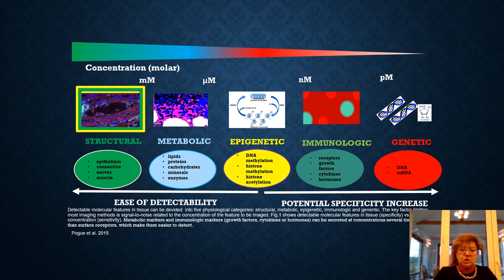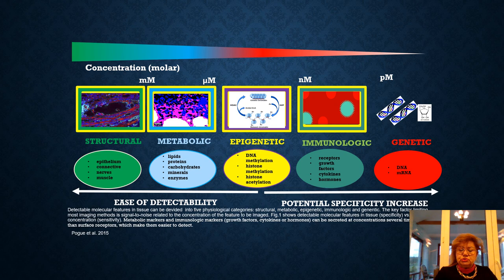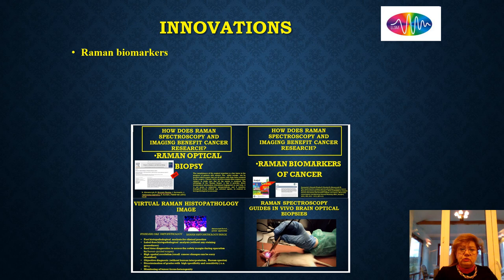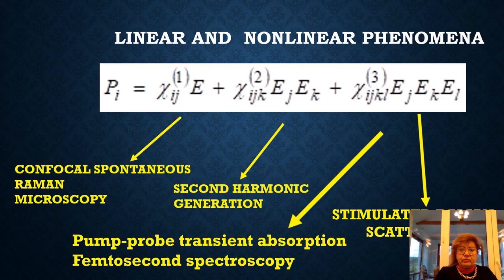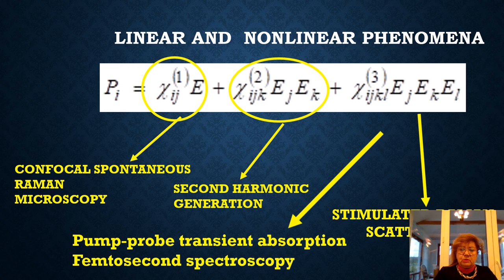With this equipment we are able to provide information on structural, metabolic, epigenetic, immunologic, and genetic information. Our innovations are related to Raman biomarkers, Raman optical biopsy, virtual Raman histopathology, and real-time in vivo neurosurgical Raman methods with linear and nonlinear optics. In our cancer research, the first term in polarization is related to spontaneous Raman microscopy, the second term to second harmonic generation, and the third term to stimulated Raman scattering and pump-probe transient absorption in femtosecond spectroscopy.